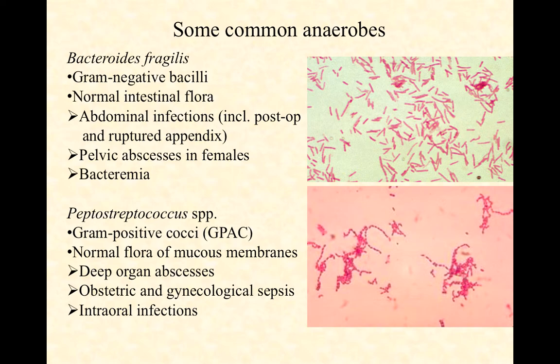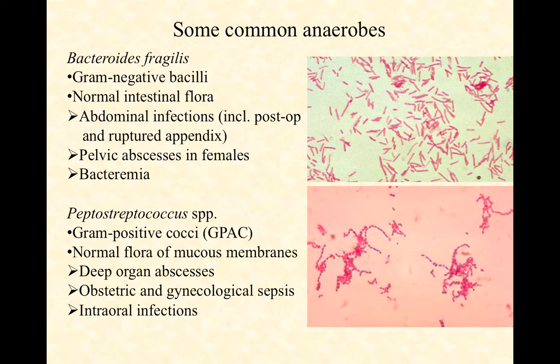Peptostreptococcus species are generally referred to as GPAC — Gram Positive Anaerobic Cocci. Clinically, you'll hear that term GPAC. These are also part of our normal bacteria, but they live in our mucous membranes. If they get away from those mucous membranes, especially far from the surface and blood vasculature, they have the potential to cause infections: deep organ abscesses, obstetric and gynecological sepsis, and intraoral infections. So two examples of common anaerobes that can cause some pretty nasty infections.